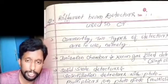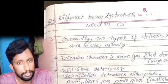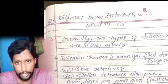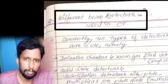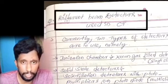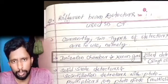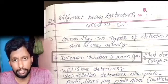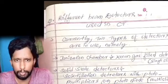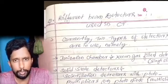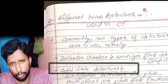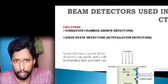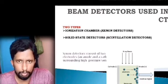Different beam detectors are used in CT. There are two types: first, ionization chamber detectors — specifically xenon-filled detectors used in single-slice CT; and second, solid-state detectors, which are scintillation detectors.